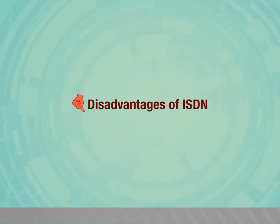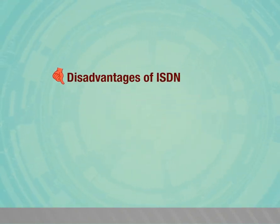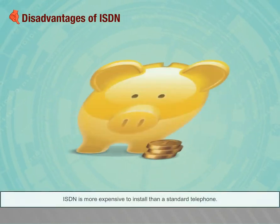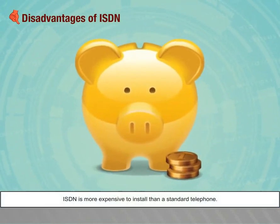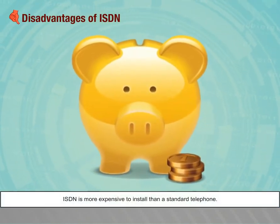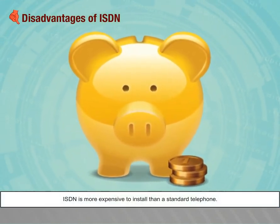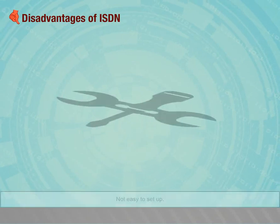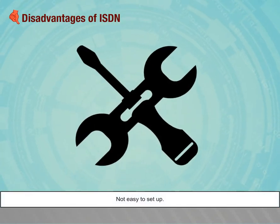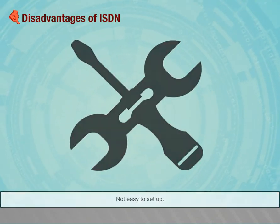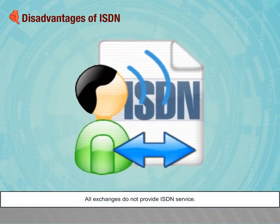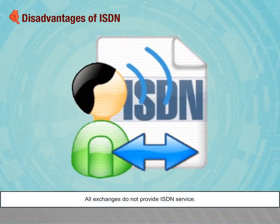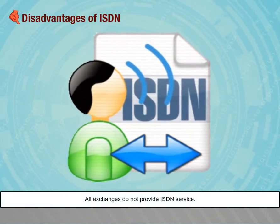Disadvantages of ISDN: ISDN is more expensive to install than a standard telephone, it is not easy to set up, and not all exchanges provide ISDN service.